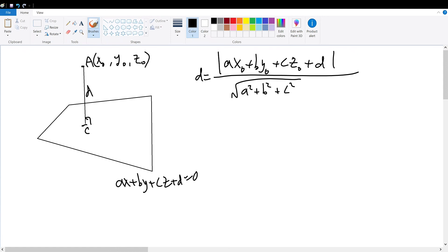Today, we're going to be proving the distance formula for a point to a given plane. The distance is equal to the absolute value of ax0 plus by0 plus cz0 plus d divided by the square root of a squared plus b squared plus c squared, where point A is represented by x0, y0, z0, the given point, and the given plane is represented in its normal form as ax plus by plus cz plus d equals 0.